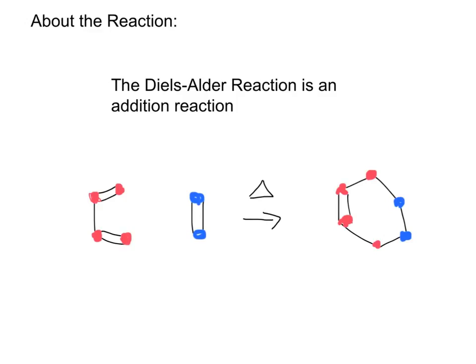Now for the basics of the reaction, the 1,3-diene will react with the dienophile — the 1,3-diene being this molecule here and the dienophile being this one. When heat is added, the two reactants will combine to form this six-membered ring, where you can see the original four atoms from the diene and the other two from the dienophile.